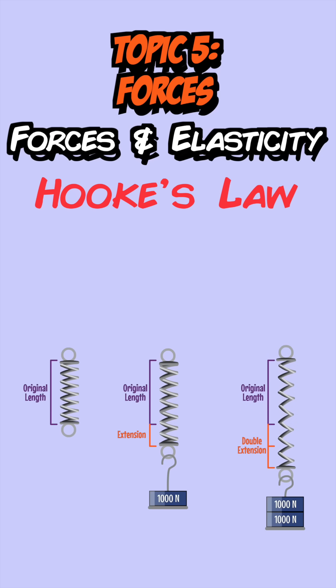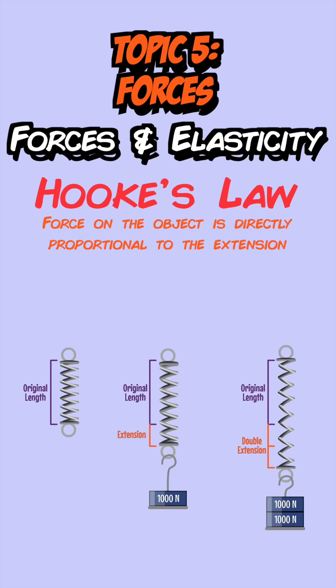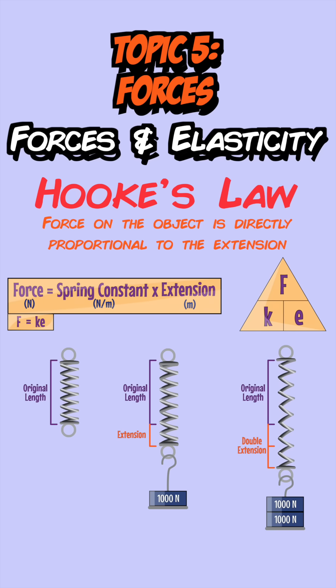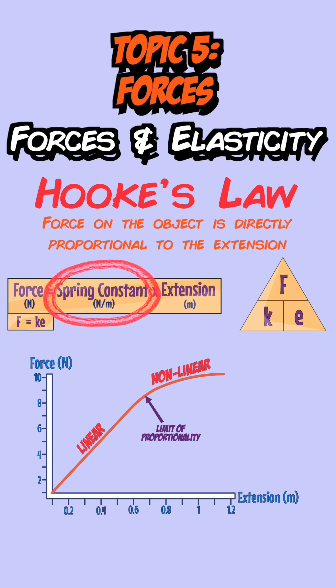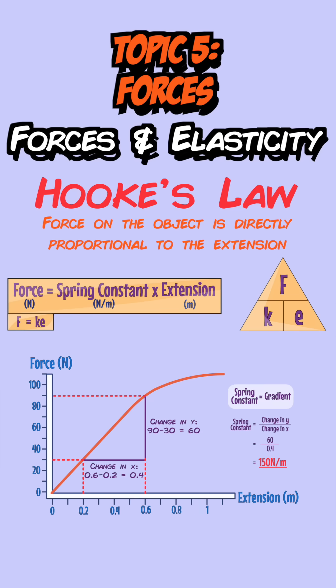Hooke's law tells you that when you deform an elastic object the force is directly proportional to the extension, shown by its equation. On a force-extension graph the line is initially straight through the origin, showing Hooke's law is obeyed. Eventually it reaches the limit of proportionality where the graph curves and Hooke's law no longer applies. The spring constant can be found from the gradient of the straight part of the line, and it tells you how easy it is to stretch the object.